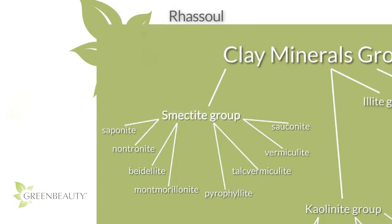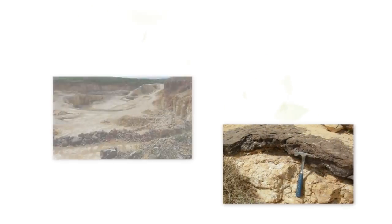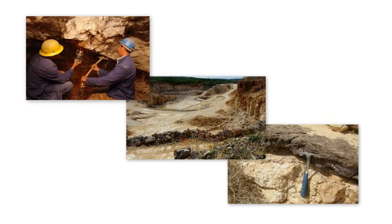Rasul clay, sometimes called ghassoul clay or Moroccan clay, is also part of the smectite group, consisting mostly of montmorillonite. Like bentonite clay, rasul clay is a volcanic clay — it's mined in the Atlas Mountains of Morocco. The word rasul derives from the Arabic word for washing, rasala.